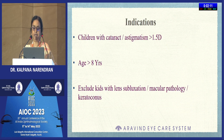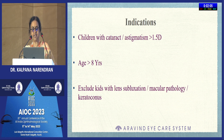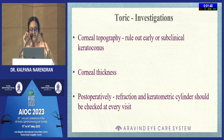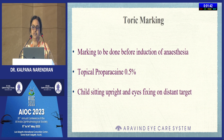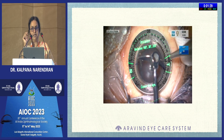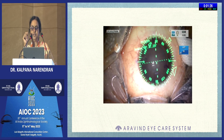For toric IOLs, I recommend above 1.5 diopters and above the age of 10 years, excluding children with other pathology such as fundus pathology, subluxation, or keratoconus. You need corneal topography and corneal thickness measurement to rule out keratoconus. Post-operatively, refraction and keratometry should be checked at every visit. Toric marking should be done before induction of anesthesia with the child sitting upright using topical anesthetic drops.